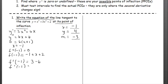And finally we can write the equation of the tangent line. That's y minus four equals the slope negative three times x plus one.